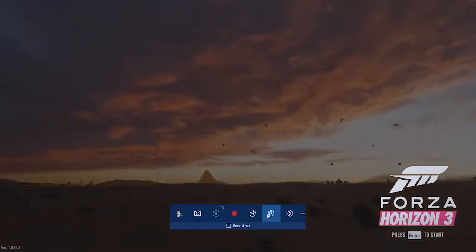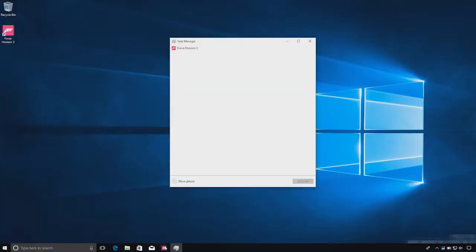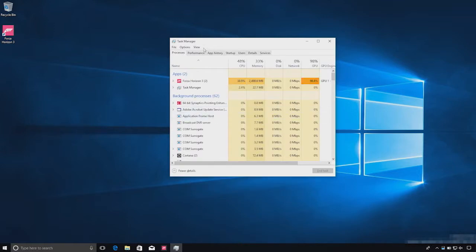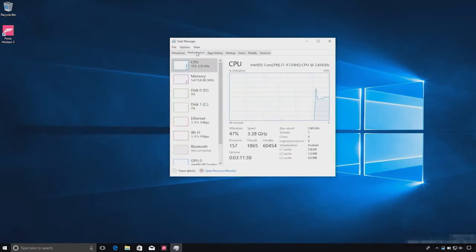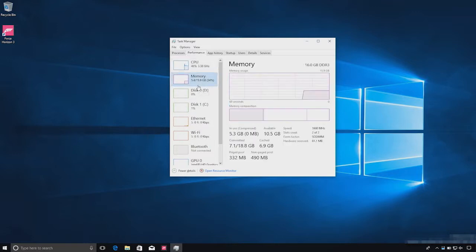Just hit Ctrl-Shift-Escape to pull up the Task Manager. Click More Detail, then choose the Performance tab. Here, you can click on each system resource to view detailed information and track performance with the Utilization Graphs.